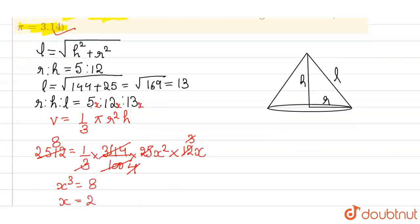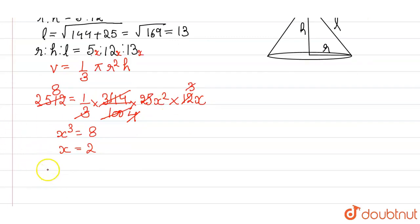Now you have to calculate, find the radius and the slant height. Okay, so radius will be equal to 5 into 2, that's 10. And slant height will be equal to 13 into 2, that's 26. That's all from my side. Thank you everyone, have a good day.